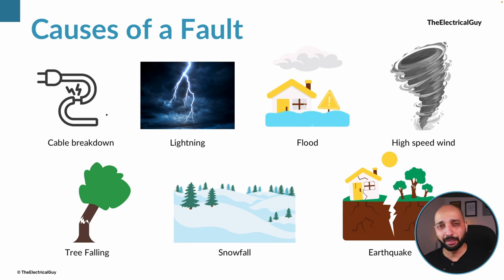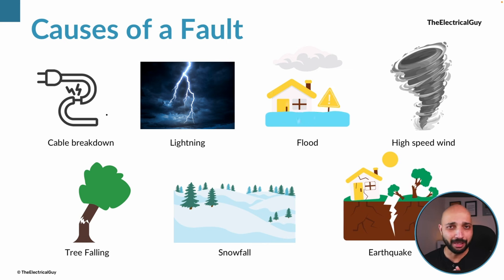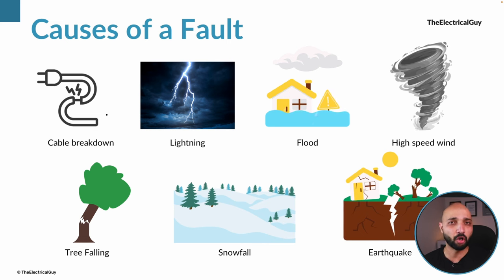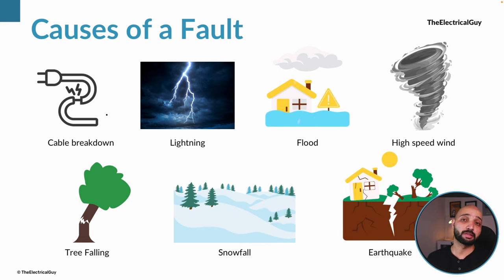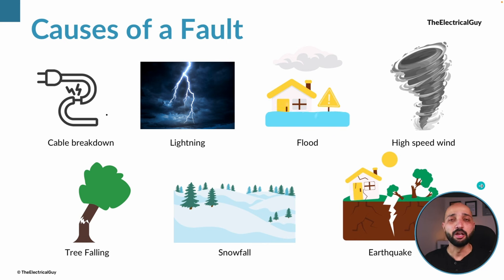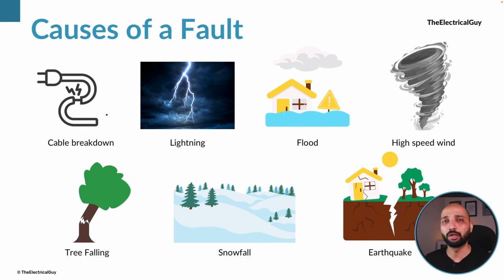It could also be a man-made situation. For example, if somebody is carrying out maintenance and during that period the connection of the equipment is done wrong, that can also cause a fault, and as a result the current can go up to a very high level. These are some of the reasons why a fault can occur.